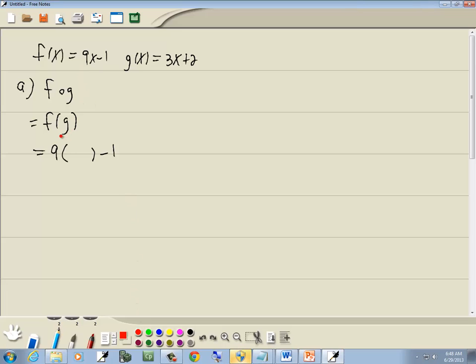Now whatever's inside of parentheses right here is automatically what we're going to put in down here. Well this is g, but g we said was 3x plus 2. So we'll put 3x plus 2 in there.